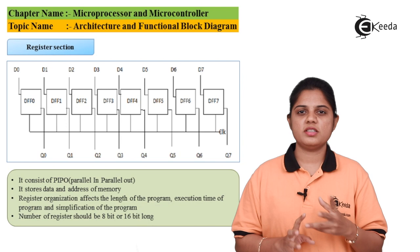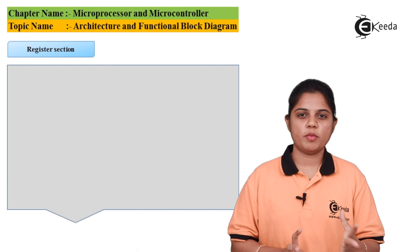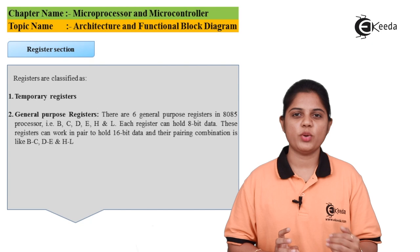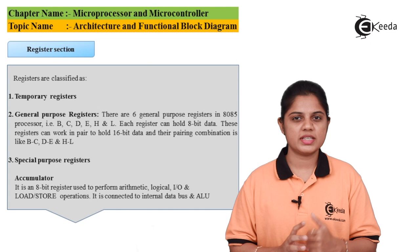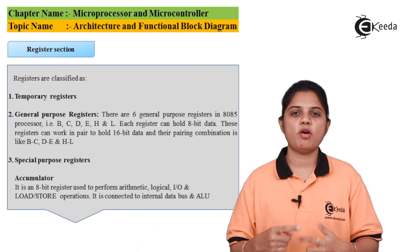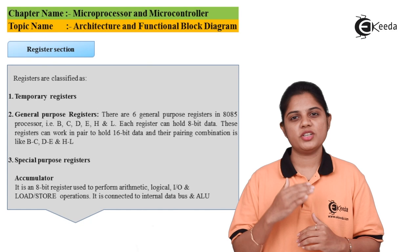We have a temporary register, special purpose register, and general purpose register. General purpose registers are B, C, D, E, H, and L — they hold 8-bit data at a time, or 16-bit data when working in pairs. A special purpose register is the accumulator — after performing a task, data can be stored in the accumulator temporarily, and then you can shift that data to the register pair where you want to store it.